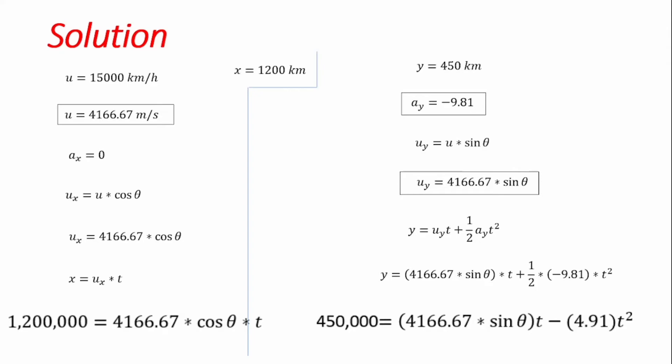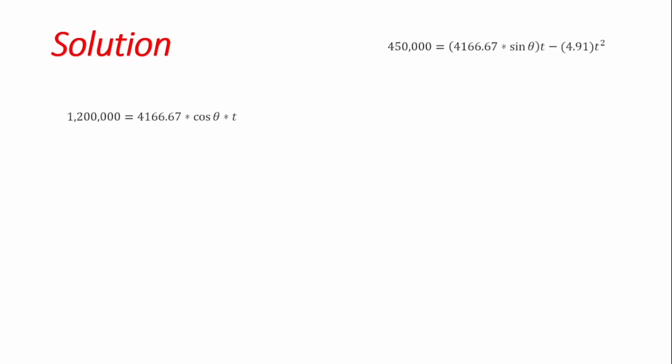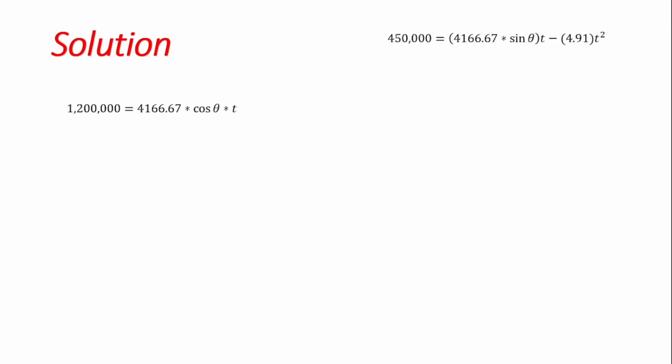We now have two equations. Solving simultaneously using substitution, we make t the subject from Equation 1: t = 1,200,000 / (4,166.67 cosθ), which simplifies to t = 288 / cosθ. We then substitute this expression for t into Equation 2 to find the unknown, theta.